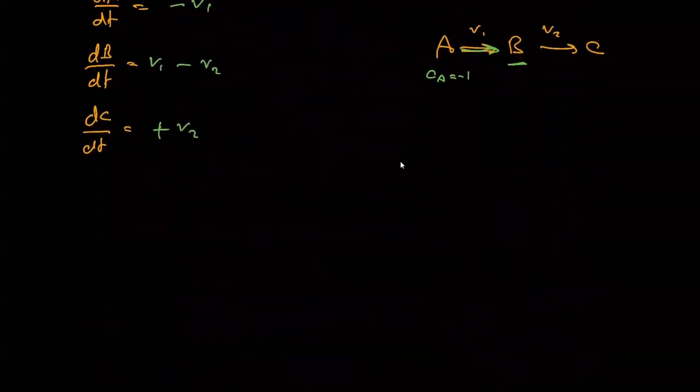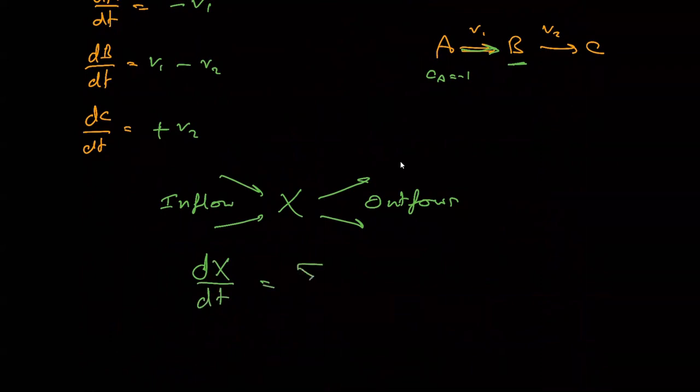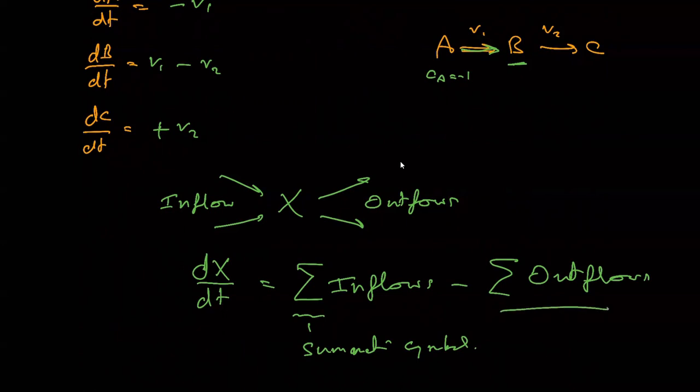So in general, if you have a node, let's say node X, and you have multiple things coming in and multiple things leaving, we'll call these the inflows and these the outflows. The rate of change of X is basically the sum of all the inflows minus the sum of all the outflows. Remember, this is the summation symbol. It just means add all the inflows together, and this means add all the outflows together.